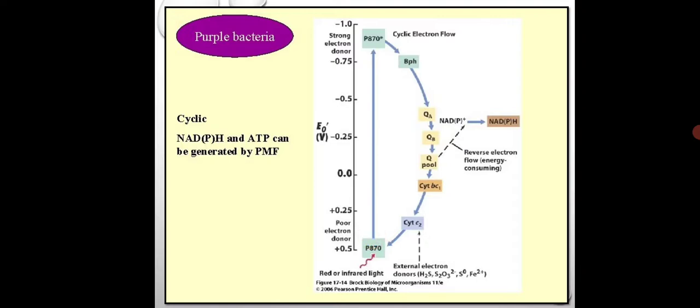As there is flow of electrons, this generates energy and pumps H+ ions from inside the cell to outside the cell. There is a high proton density gradient outside the cell, and these protons come back into the cell, which helps produce ATP. This proton motive force helps for the generation of ATP and NADPH molecules.